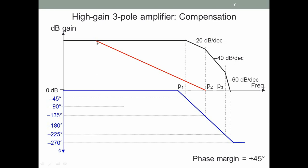We move the dominant pole from P1 to a much lower frequency so that at P2 the gain becomes 1. The dominant pole is moved to the left. This is dominant pole compensation.